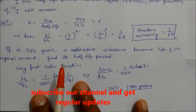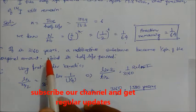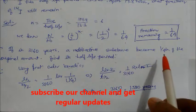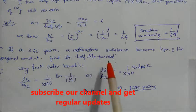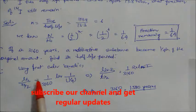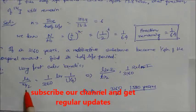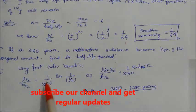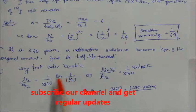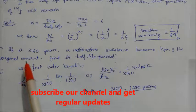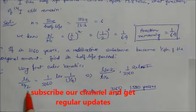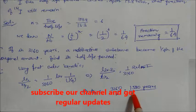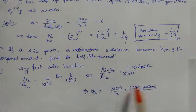Problem 5: In 3160 years, a radioactive substance becomes one-fourth of the original amount. Find its half-life period. Using first order kinetics: ln 2 / t½ = (1/3160) × ln(1/(1/4)). Since one-fourth of the original amount is left, on solving you get the half-life equal to 1580 years.